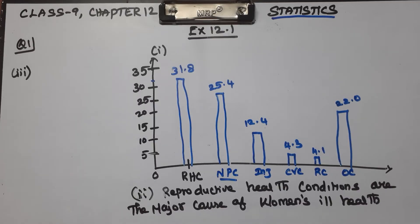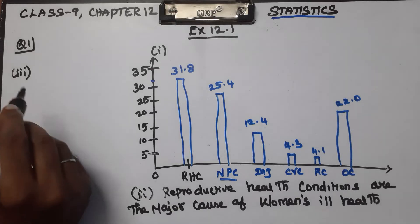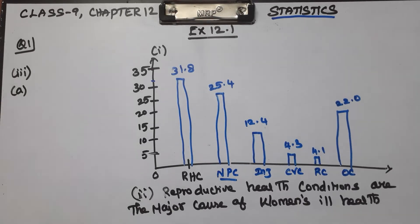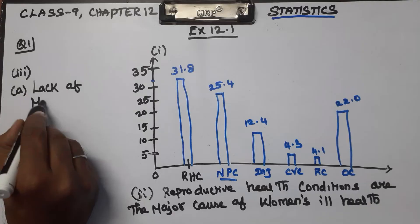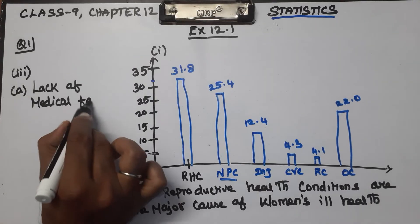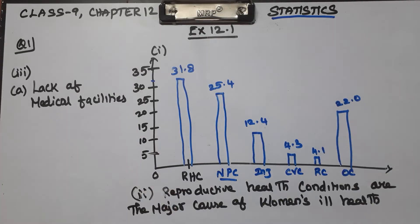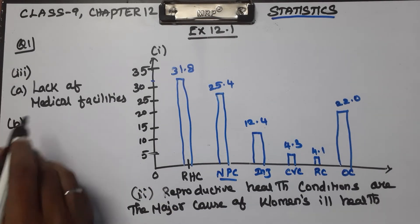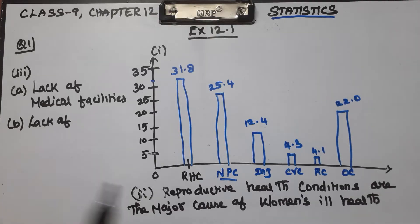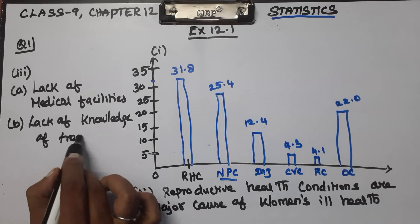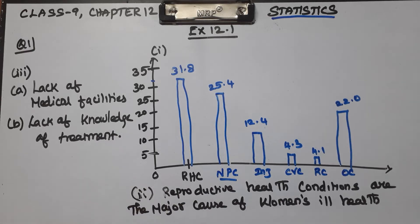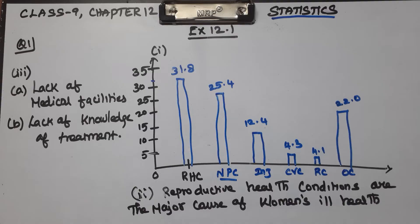That is the social responsibility. We have two points. Number 1: Lack of medical facilities — medical facilities are not good. Number 2: Lack of knowledge of treatment. There are specialists like eye specialists and heart specialists for different conditions. That is why we cite lack of knowledge of treatment. That is question number one.